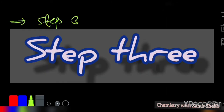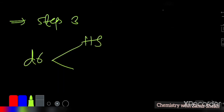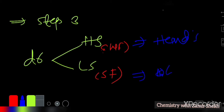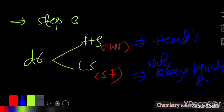After finding the system — here d6 — step three is to determine whether the complex is high spin or low spin. In a high spin complex (weak field ligand), we obey Hund's rule, maximizing unpaired electrons. In a low spin complex (strong field ligand), we do not obey Hund's rule and electrons pair up first.